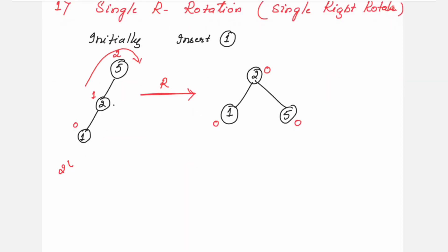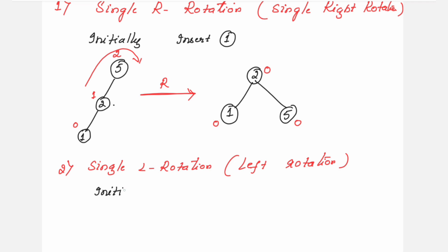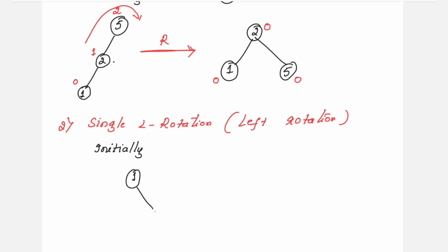The second type is the single left rotation. Initially you have two nodes in the tree, 1 and 2. You want to insert node 3. Node 3 is placed to the right side of node 2 since 3 is greater than 2. Now calculate the balance factor: for node 3 it is 0, for node 2 it is 1, and for node 1 it is 0 minus 2, which is minus 2.